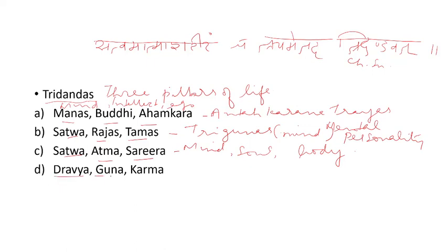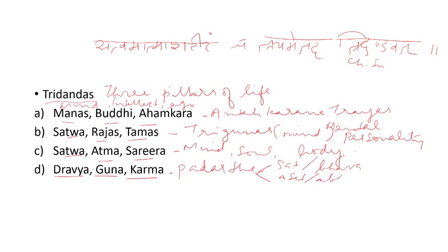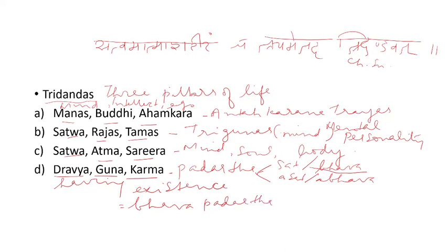The fourth option is Dravya, Guna, Karma. These belong to the Padhartha. Among the six Padhartha — Dravya, Guna, Karma, Samanya, Vishesha, and Samavaya — these are Bhava Padhartha, that which have existence. So Dravya, Guna, Karma are Bhava Padhartha. Here the three pillars of life from this sloka are: 'Sattva Atma Shariram Cha Traya Metat Tridandam.' So the answer is option C — Sattva, Atma, Sharira.